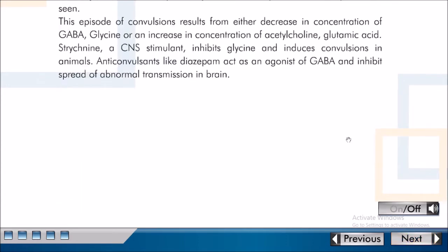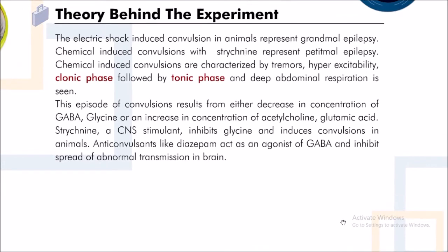Electric shock-induced convulsions in animals represent Grand Mal Epilepsy. Chemical-induced convulsions with Strychnine represent Petit Mal Epilepsy. Chemical-induced convulsions are characterized by tremors, hyperexcitability, a clonic phase followed by a tonic phase, and deep abdominal respiration. These episodes of convulsions result from either a decrease in concentration of GABA or glycine, or an increase in concentration of acetylcholine or glutamic acid.